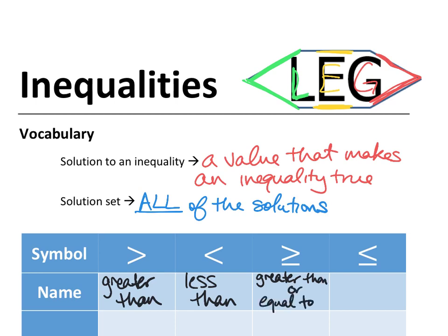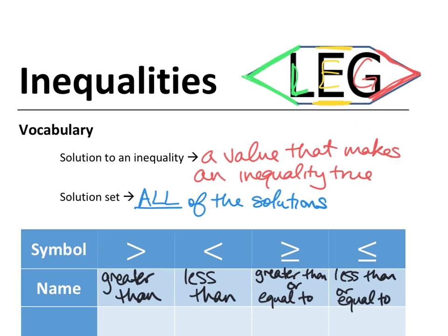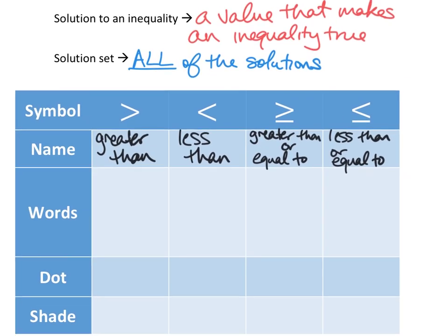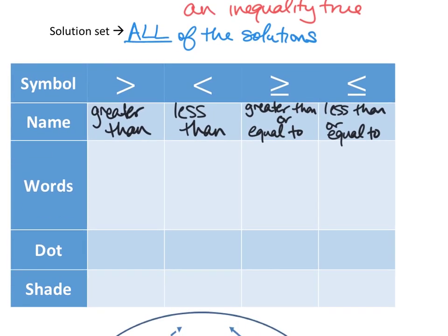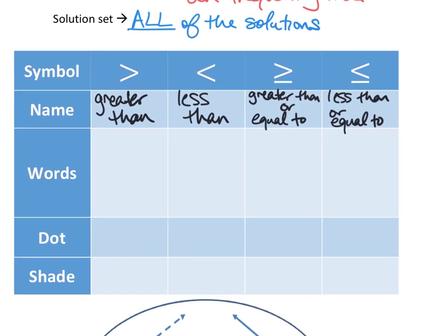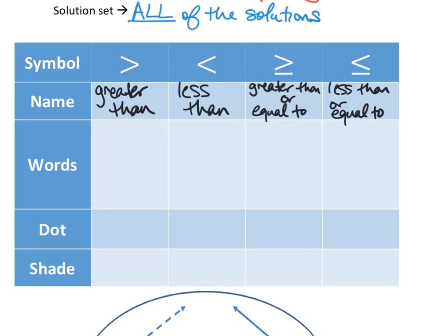Greater than or equal to. Which means the last one is called less than or equal to. Those are the four symbols we're going to be using in class today.